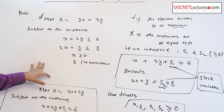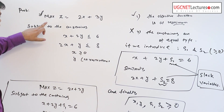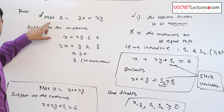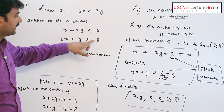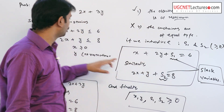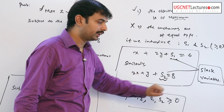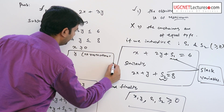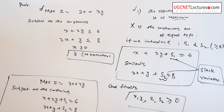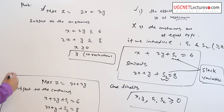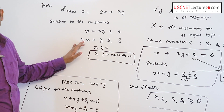How does this problem reduce to standard form? In standard form, the objective function is maximization. We discuss how the inequality sign changes to equality form. So x plus 2y plus s1 equals 6, and 2x plus y plus s2 equals 8. But the problem is that the third criterion of standard form requires all decision variables to be non-negative.